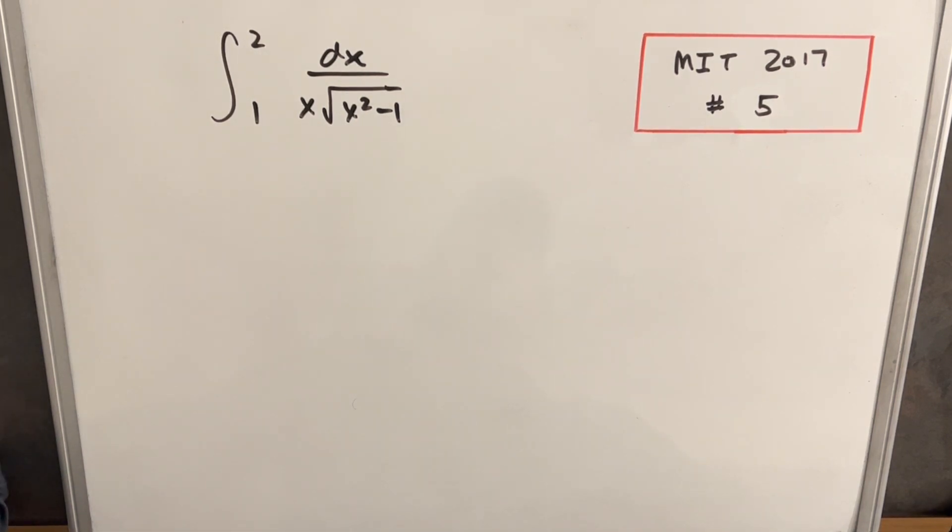Okay, this is MIT Integration B 2017, problem number five. We have the integral from two to one of dx over x square root of x squared minus one.